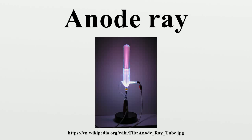An anode ray is a beam of positive ions that is created by certain types of gas discharge tubes. They were first observed in Crookes tubes during experiments by the German scientist Eugen Goldstein, in 1886.